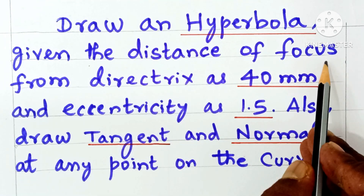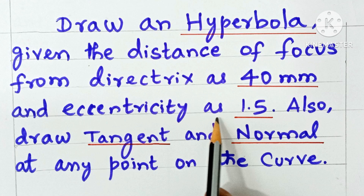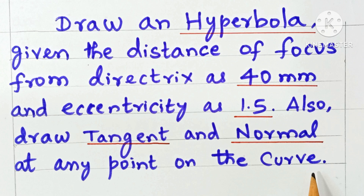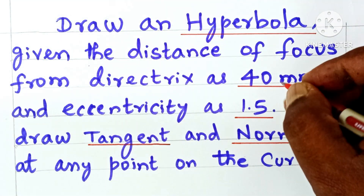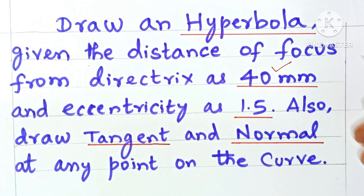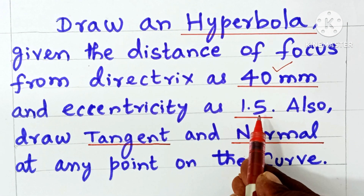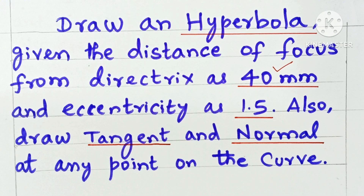Given the distance of focus from the directrix as 40 mm and the eccentricity as 1.5, also draw tangent and normal at any point on the curve. So distance of focus from the directrix is given as 40 mm. 40 mm means 4 centimeter and eccentricity 1.5 is not given in terms of a fraction, so you have to convert 1.5 into fractional form using a protractor check.